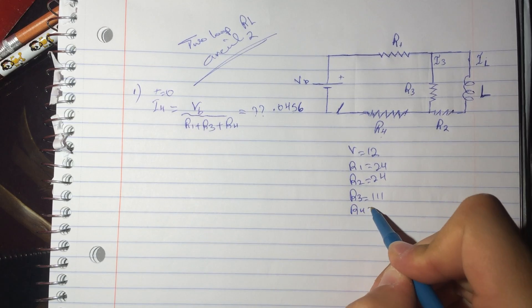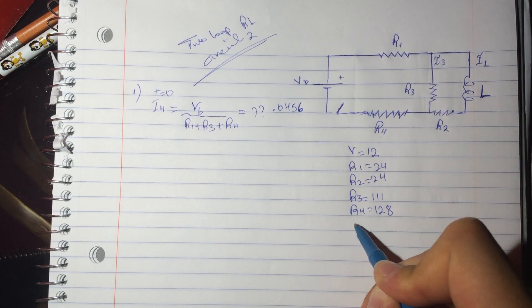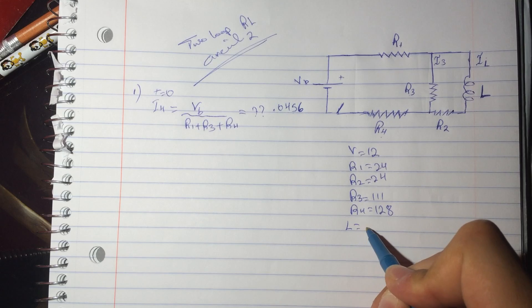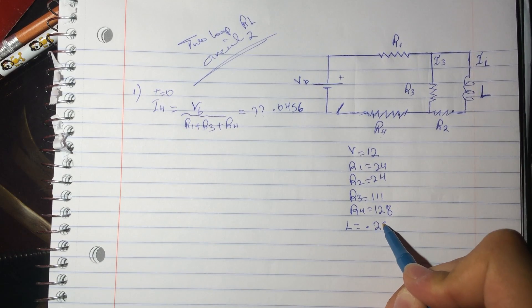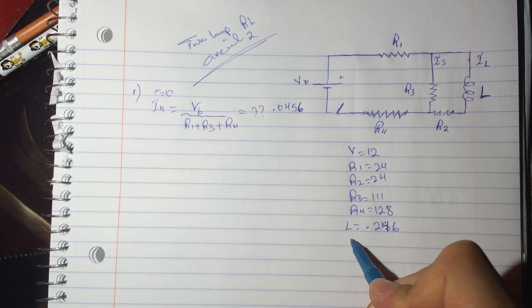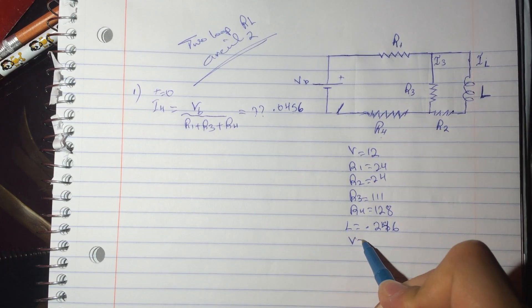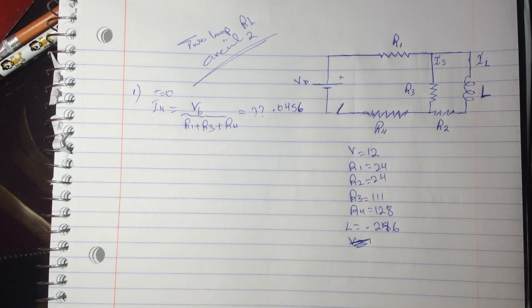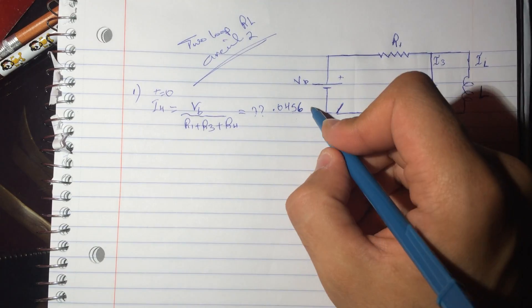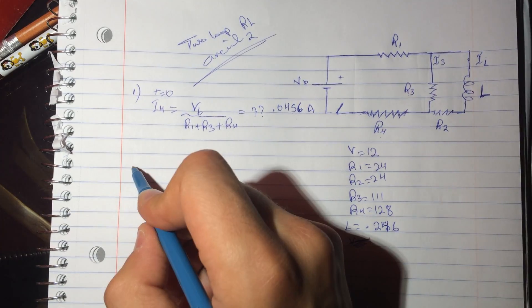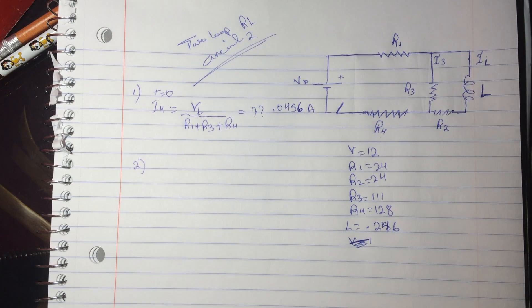R4 is 128Ω, the inductor is 246, and V is 12V. That gives us 0.0456 amperes for question one.